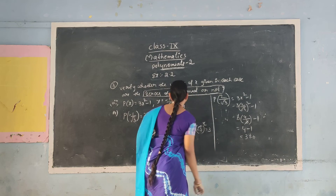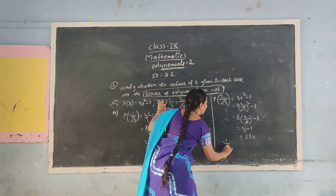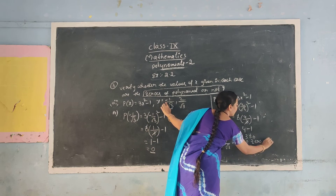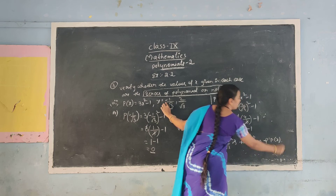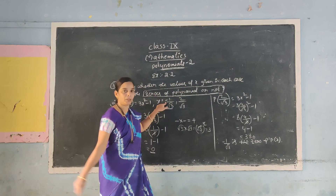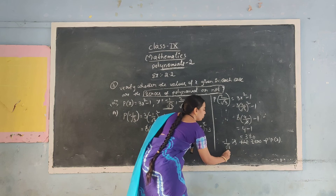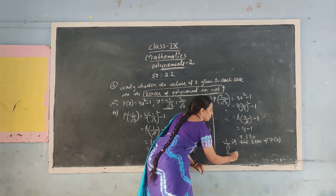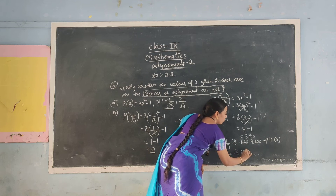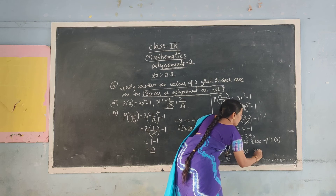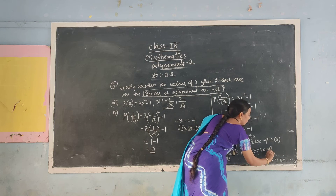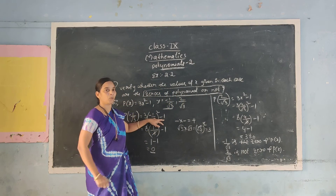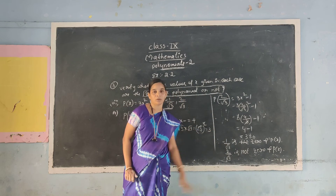After finishing this, we conclude: minus 1 by root 3 is the zero of p(x). And 2 by root 3 — since zero is not obtained — it is not the zero of p(x). In these 2 values, only 1 number is the zero of the polynomial and the other is not.